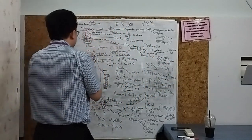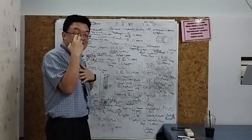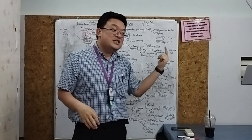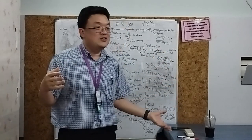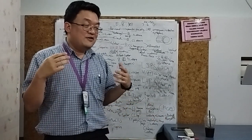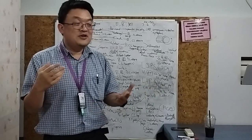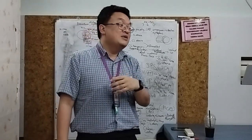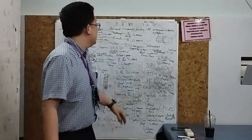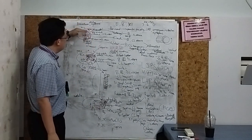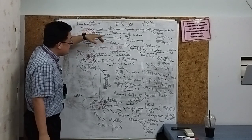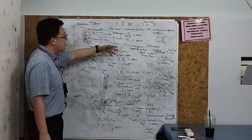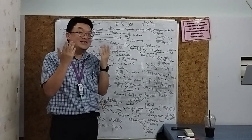To summarize brainstem localization: medial or ventral syndrome gives contralateral hemiparesis and contralateral loss of vibration and proprioception. Lateral syndrome gives Horner's and contralateral pinprick loss. Cranial nerves 5, 6, 7, 8 indicate pons; 9, 10, 11, 12 indicate medulla. For the midbrain: tectum gives Parinaud; superior cerebellar peduncle gives Nothnagel with ipsilateral ataxia; red nucleus gives Claude with contralateral ataxia; cerebral peduncle at the front gives Weber with hemiparesis and third nerve palsy.